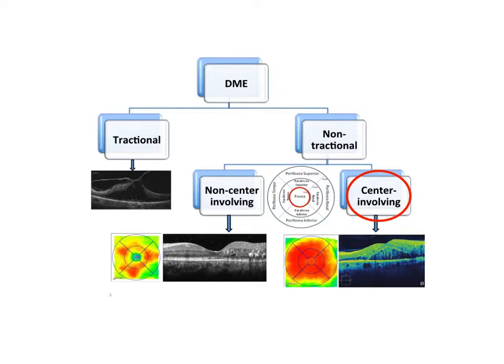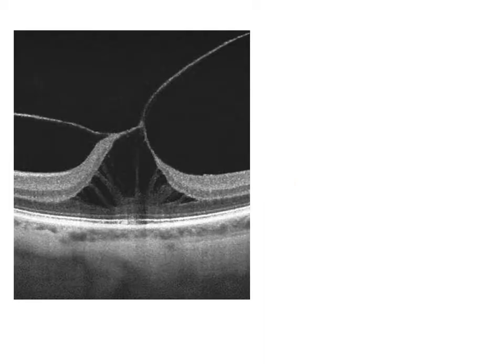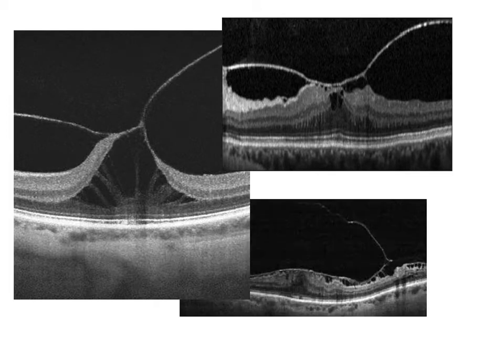Non-tractional macular edema is further classified into central and non-central macular edema, according to whether it affects the foveal contour or not. Tractional macular edema is commonly seen in vitreo-macular traction syndromes, epiretinal membranes, and tractional retinal detachments. The tangential and antero-posterior tractions distort the foveal anatomy.